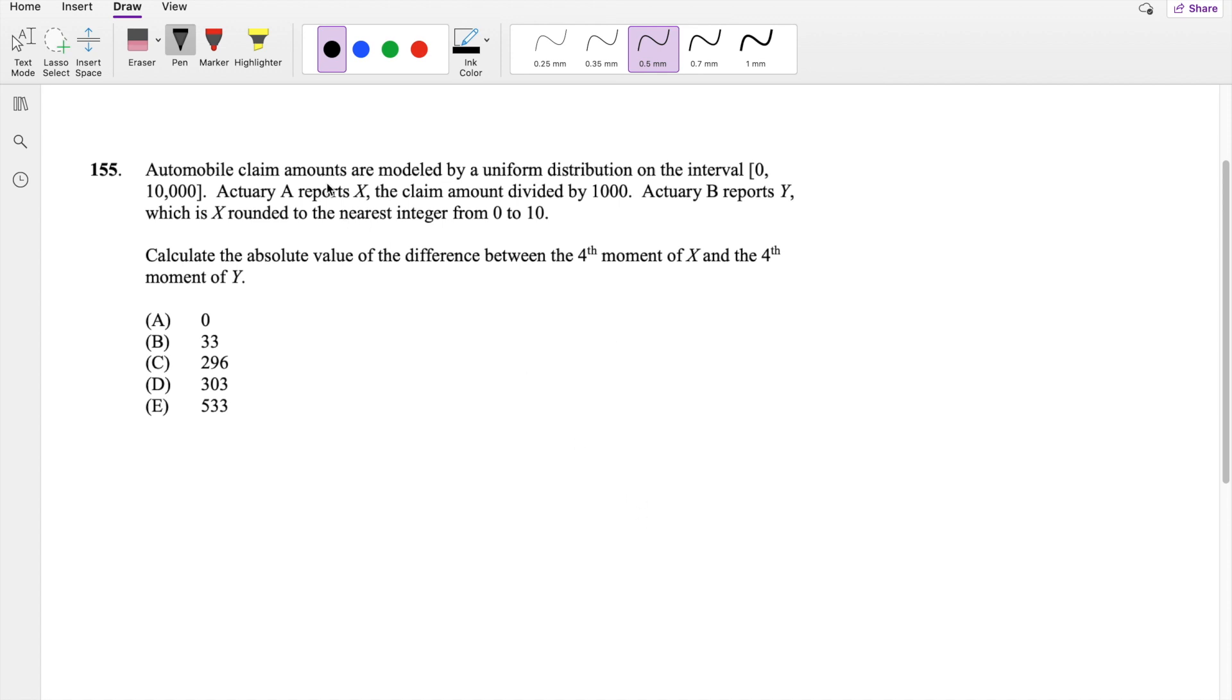An automobile claim amounts are modeled by a uniform distribution on 0 to 10,000. X is defined as the claim amount divided by 1,000. So if the claim is going from 0 to 10,000, then X goes from 0 divided by 1,000, which is 0, to 10,000 divided by 1,000, which is 10.